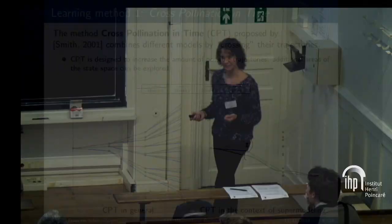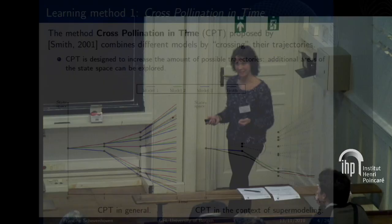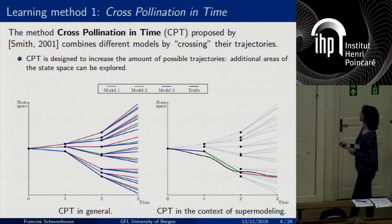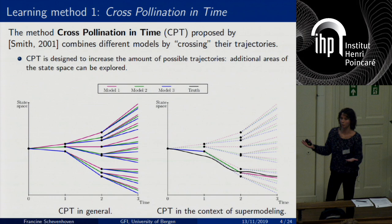My first training method is based on cross-pollination in time, an idea of Lunkeit-Smith and already explained by Heilang Du. The idea is that you cross different model trajectories. By crossing these trajectories, you get a larger amount of possible trajectories — you create a larger ensemble. In that way, you can explore different areas of your state space and hopefully get closer to the truth.